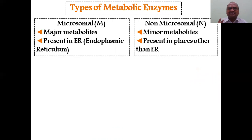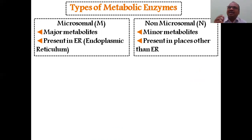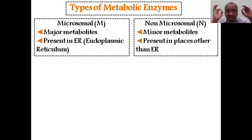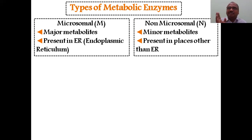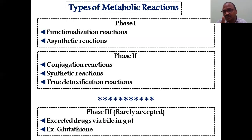Metabolizing enzymes are of two types: microsomal (indicated by M) and non-microsomal (indicated by N). The major metabolizing enzymes are microsomal, present in the endoplasmic reticulum (ER). Non-microsomal enzymes are minor metabolites present in places other than the ER, but they also contribute to some extent.